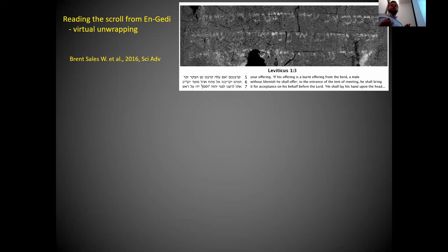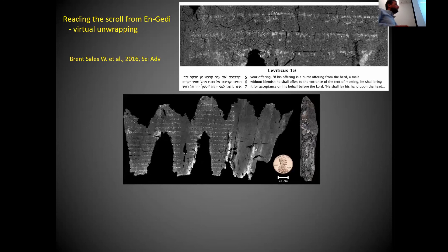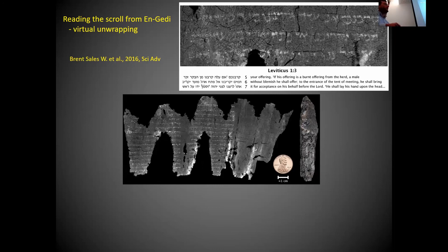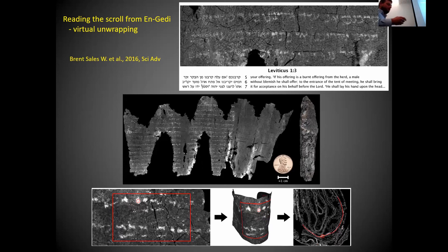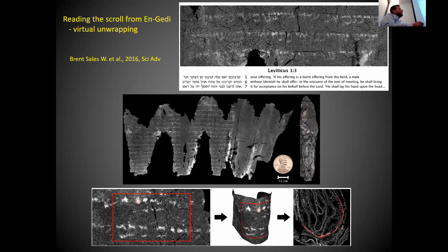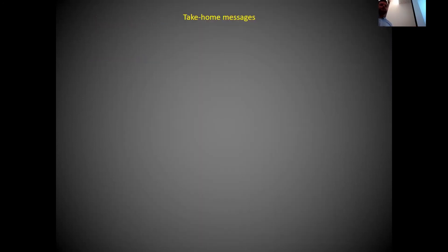The most impressive display of micro-CT's power is where researchers retrieved text from a scroll that was virtually unwrappable. They scanned the scroll and managed to digitally and virtually unwrap it and read lines of text — some lines were lost, but on the cross-sections they differentiated individual letters, and using sophisticated computer analysis they reconstructed parts of the text.